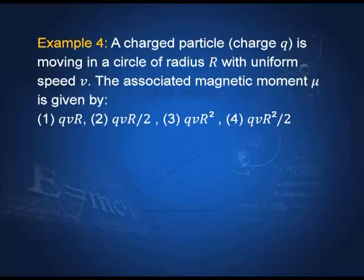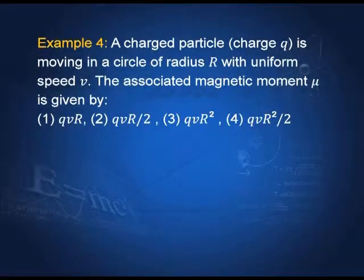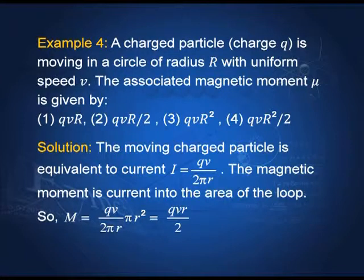Another example: a charged particle of charge q moves in a circle of radius r with speed v. The associated magnetic moment μ is to be found. The moving charge is equivalent to a current i = qv/2πr. The magnetic moment of the loop equals the current times the area: μ = i·πr² = (qv/2πr)·πr² = qvr/2. Remember, these formulae require only recall and some common sense.